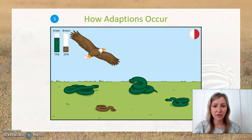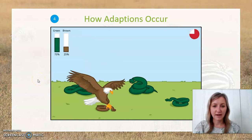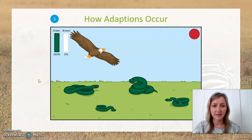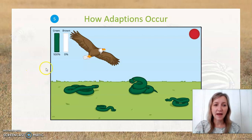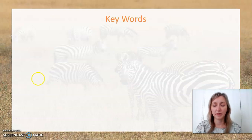If we then look at a subsequent generation, we now have 75% of the snakes are green, but only 25% of the snakes that are left are brown. These are the snakes that are left that are able to reproduce. If then more brown snakes continue to be eaten, we now have 0% brown snakes, meaning that only the green snakes are available to reproduce — they are the fittest, and that adaptation occurs and more of them will be green.